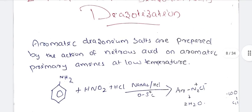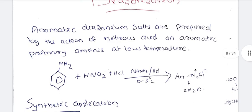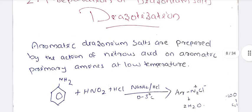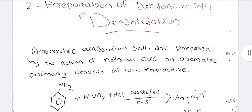Now the preparation of diazonium salts. Aromatic diazonium salts are prepared by the action of nitrous acid (HNO2) — not nitric acid (HNO3) — on aromatic primary amines. Primary amines are treated with NaNO2 and HCl at low temperature (0–5°C) to form the diazonium salt ArN2+Cl−. That is the diazotization reaction.